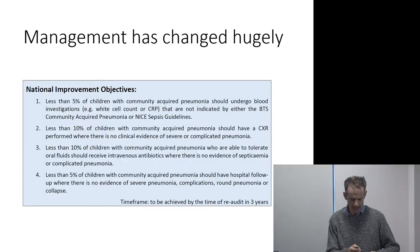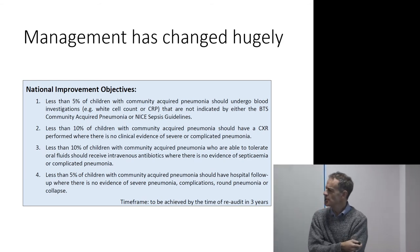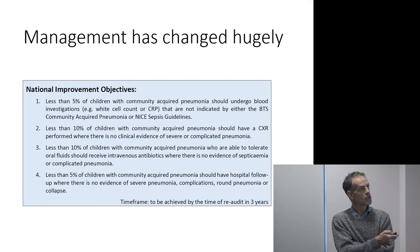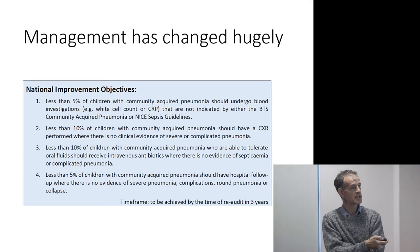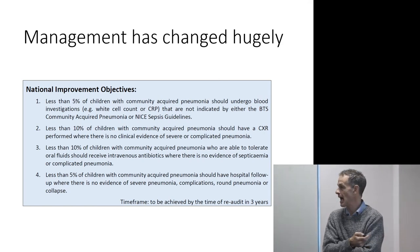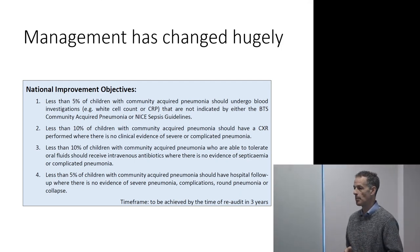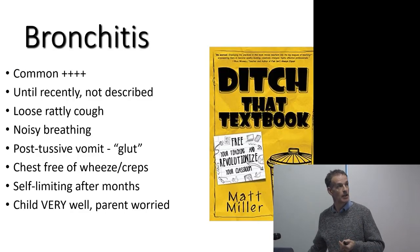This is the National Improvement Objective: less than 5% having blood tests, less than 10% having a chest x-ray, less than 10% having IV antibiotics, less than 5% coming back for follow-up. I would argue that all of those should be close to 0%. But this is a huge change from what happened before — we are moving hugely.